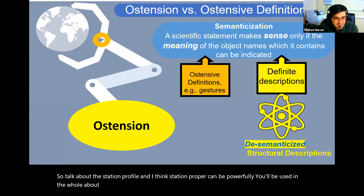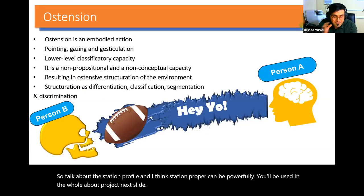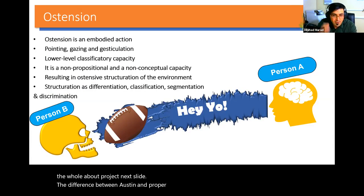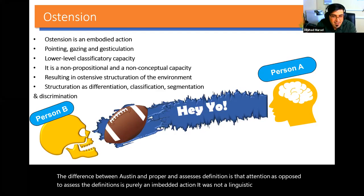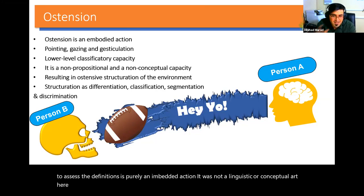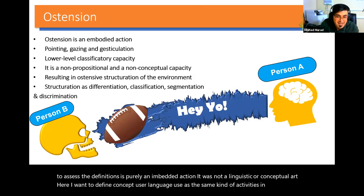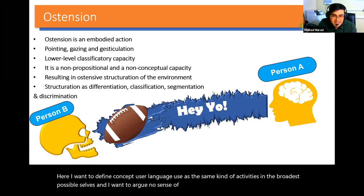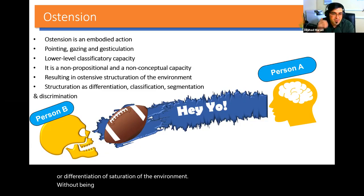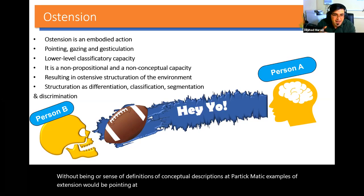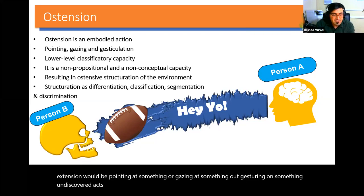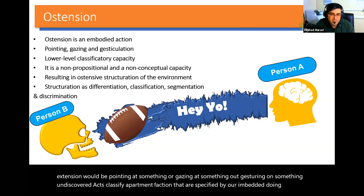I think ostension proper can be powerfully used in the whole Aufbau project. The difference between ostension proper and ostensive definition is that ostension, as opposed to ostensive definitions, is purely an embedded action — not a linguistic or conceptual act. Here I want to define concept use and language use as the same kind of activities in the broadest possible sense. I want to argue that ostensive acts result in some kind of structural difference, differentiation, or saturation of the environment, without being ostensive definitions or conceptual descriptions. Paradigmatic examples of ostension would be pointing at something, gazing at something, or gesturing at something.